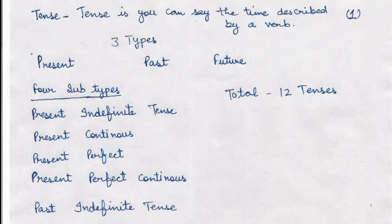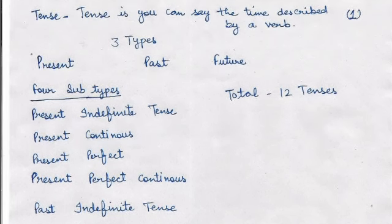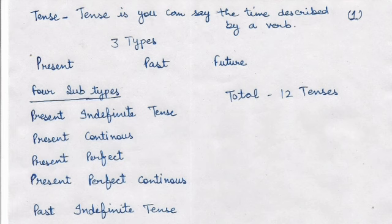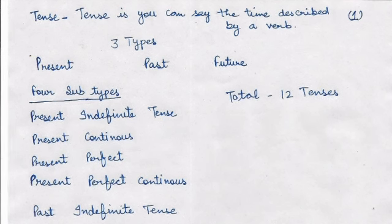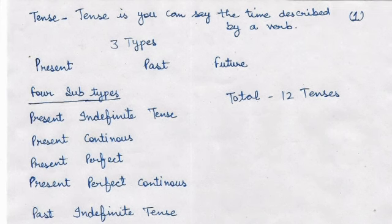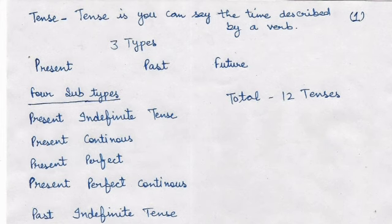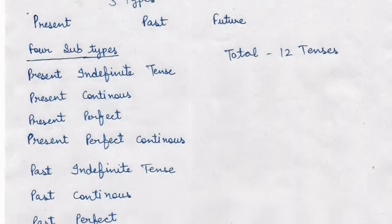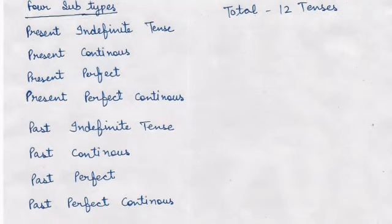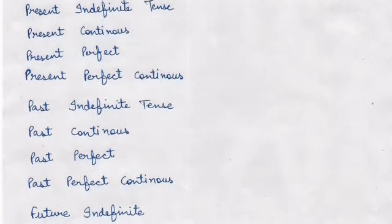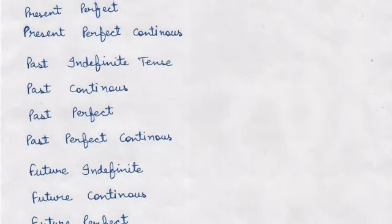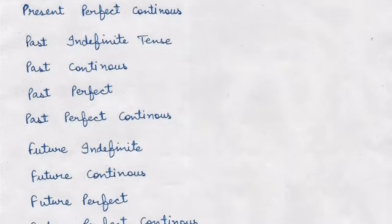Hello friends, today we will do the most important thing: tenses. A tense is the time described by a verb. We have three main types of tenses — present, past, and future — and these three types have four sub-kinds each: present indefinite, present simple, present continuous, present perfect, and present perfect continuous. Past and future also have four subtypes, so we have a total of 12 kinds of tenses.